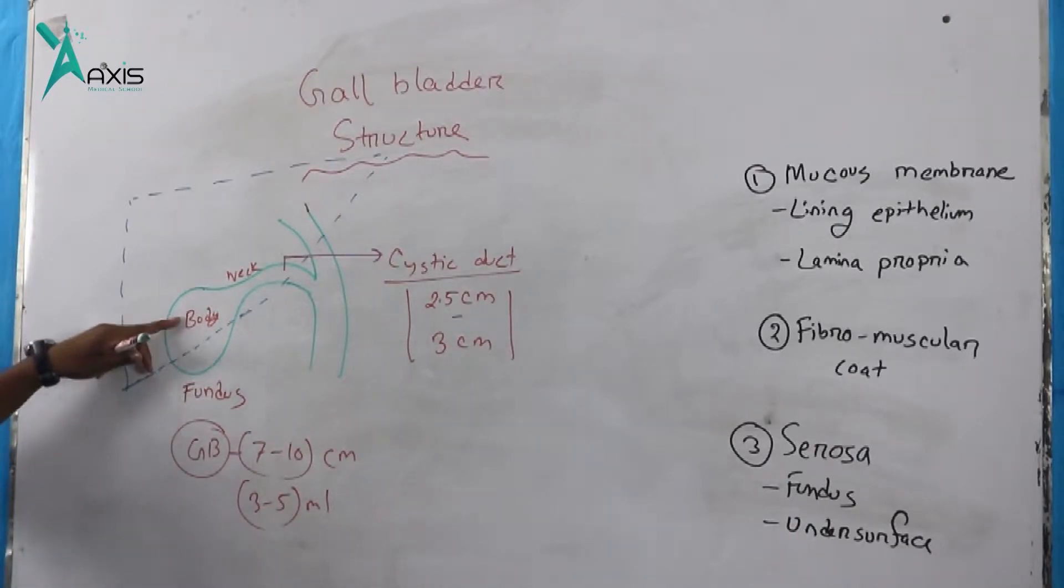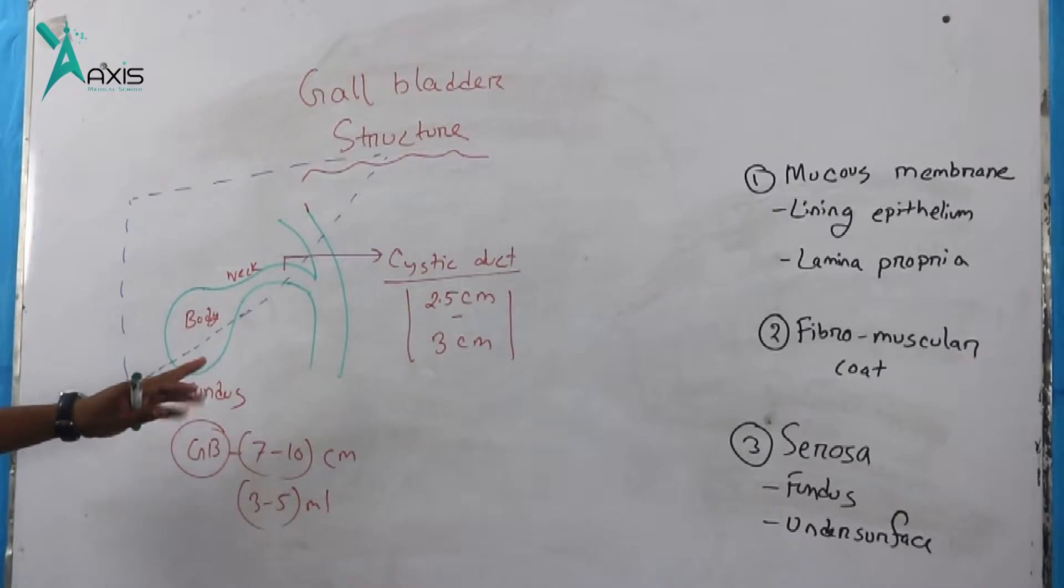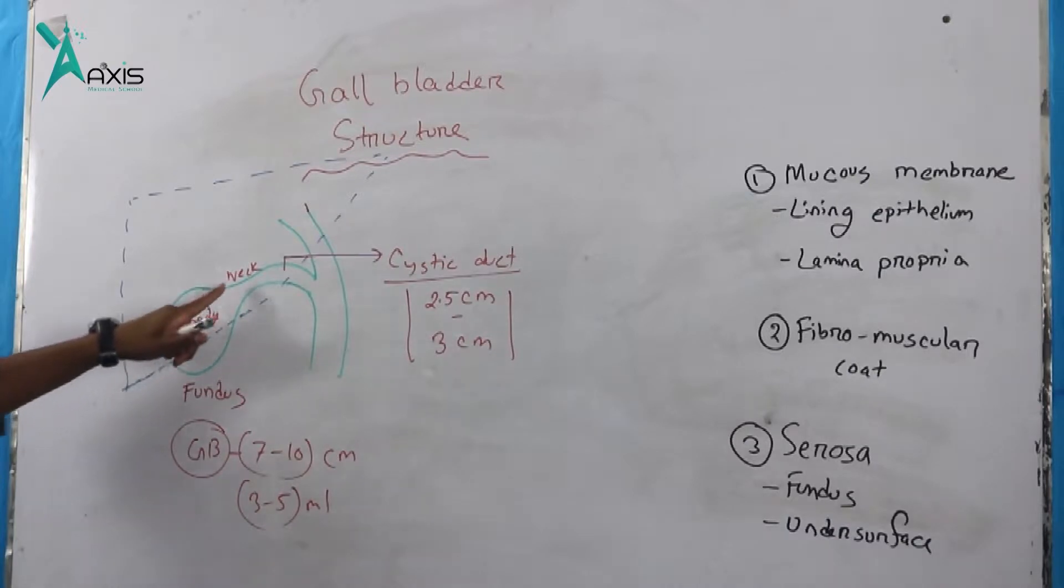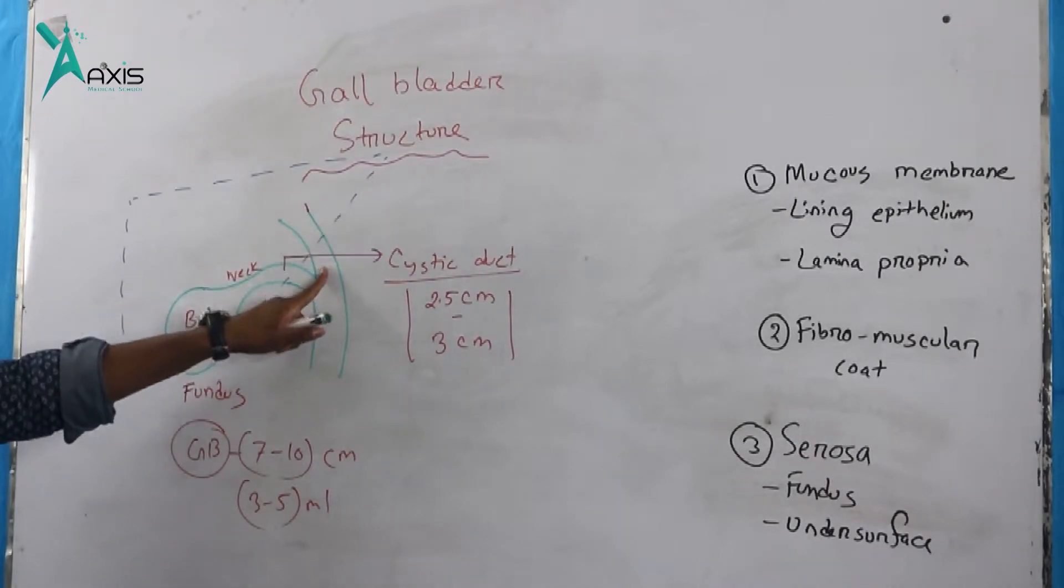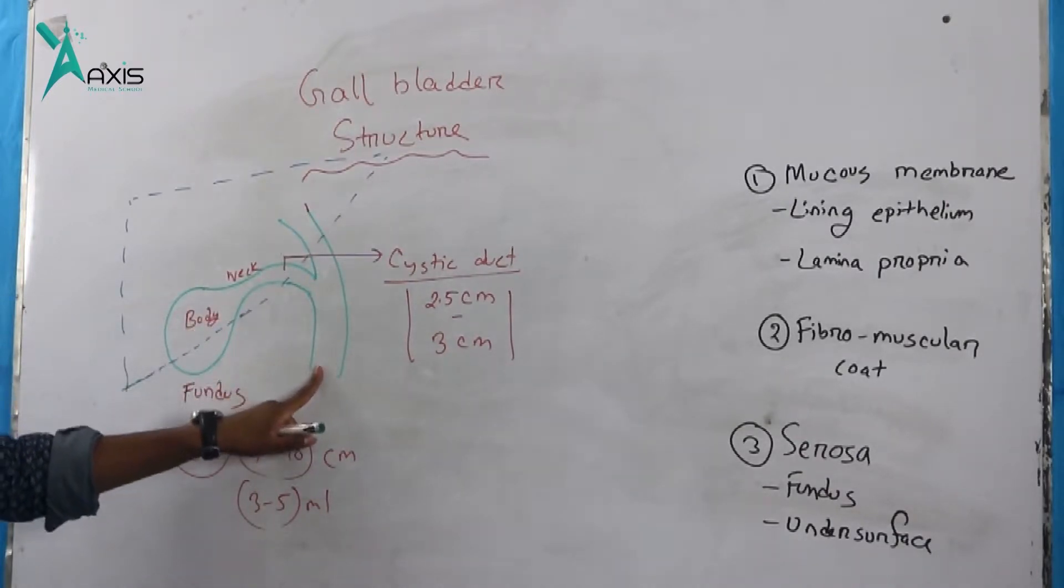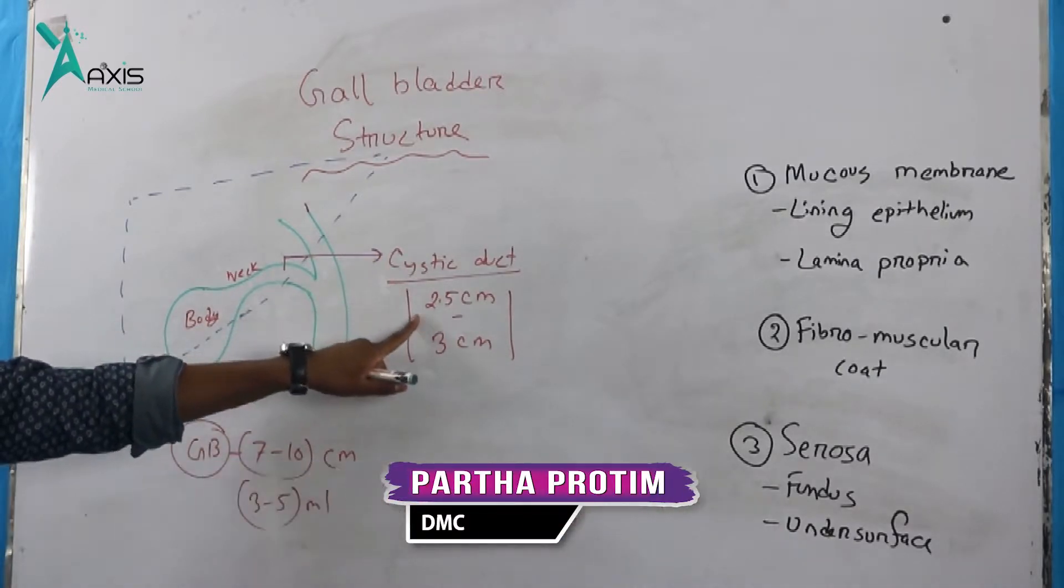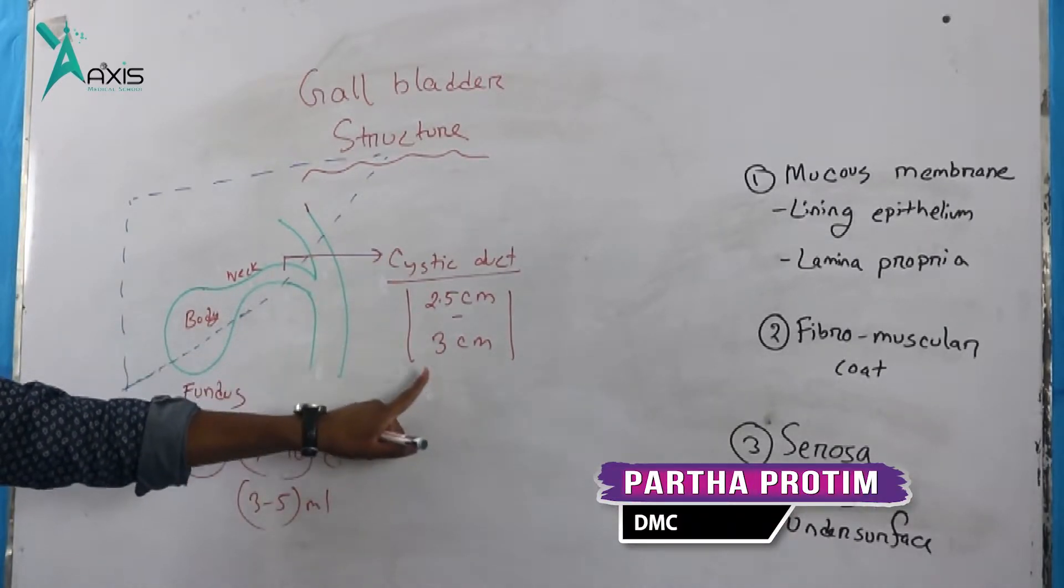One is fundus, body, and neck. Fundus is the portion that underlies the inferior border of liver. This is the body and the neck. This is the cystic duct. The cystic duct length is 2.5 inches and the body is 3 inches.